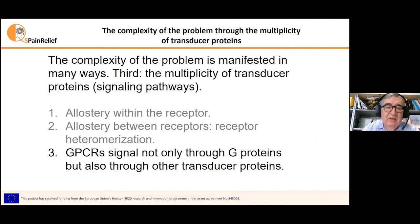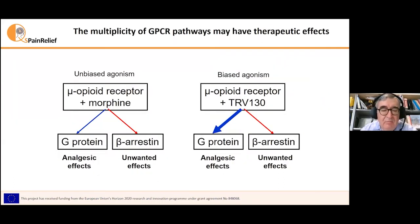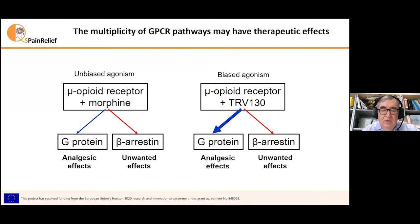Another source of complexity comes from the fact that GPCRs signal not only through the G-protein, but also through other transducer proteins, such as the beta-arrestin protein. Agonists may favour one or the other signaling pathway, and this is called biased agonism or functional selectivity. In the case that one signaling pathway is associated to the therapeutic effect and the other to unwanted side effects, we need ligands biased in the proper direction. This happens with the mu opioid receptor. Morphine is a balanced agonist acting on both the G-protein-dependent pathway and the beta-arrestin pathway. It was postulated that the G-protein-dependent pathway is associated to the therapeutic effect, whereas the beta-arrestin pathway is responsible for the unwanted effects. This is now under debate — it is not clear.